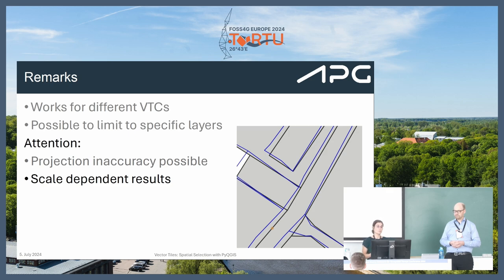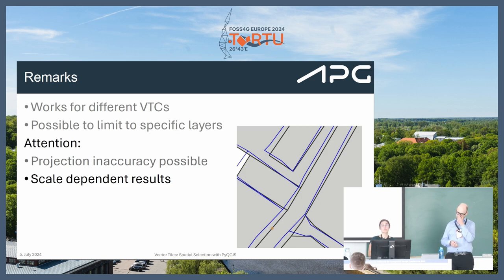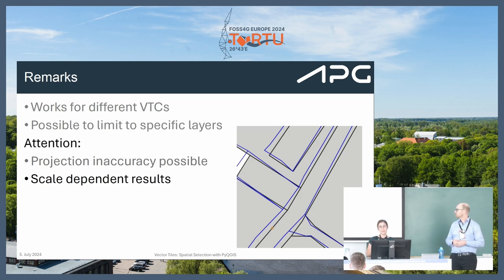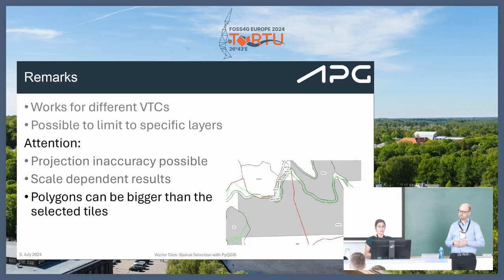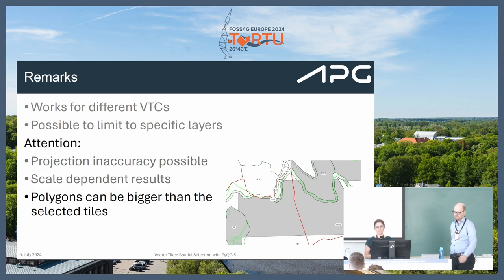Another important thing: you need to know what scale gives you the correct polygon geometry in the vector tile cache. At other scales, it looks simplified — the blue one shows the simplified version, and the black is the one you actually need. You need to know your vector tile cache and at which zoom level it is correct. Also, polygons can be bigger than the selected tiles, so that is important to know.